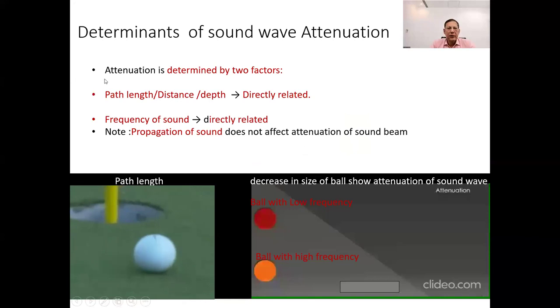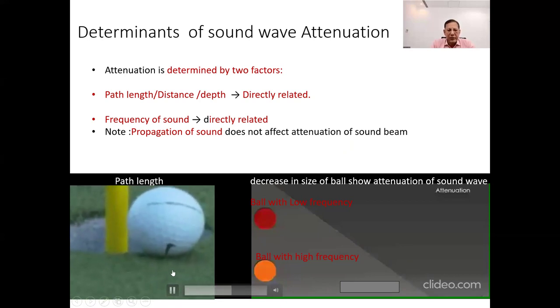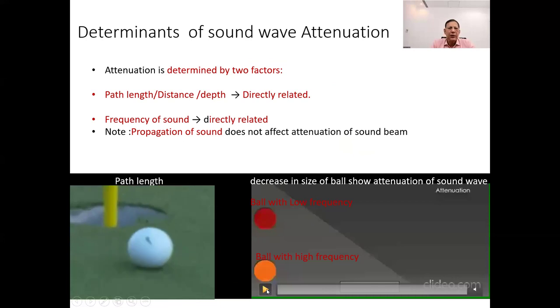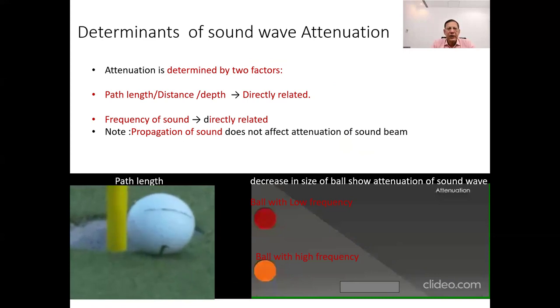Attenuation is determined by two factors. Number one, path length, which is simply the distance the sound wave travels through a medium. For example, if you're walking from one end of a room to the other, the path length is the length of the room. Attenuation is directly related to path length. The longer the distance the sound wave travels, the more it weakens.